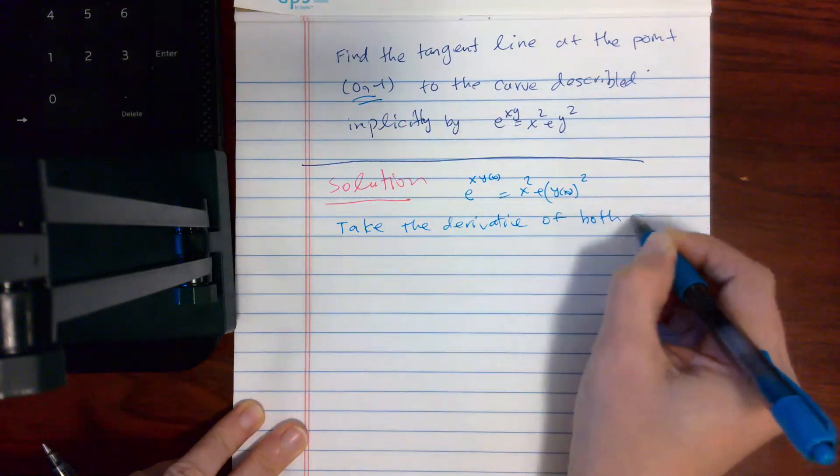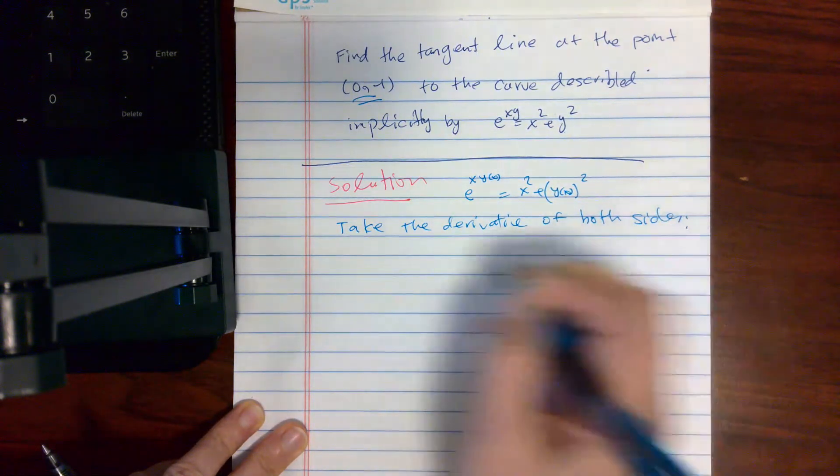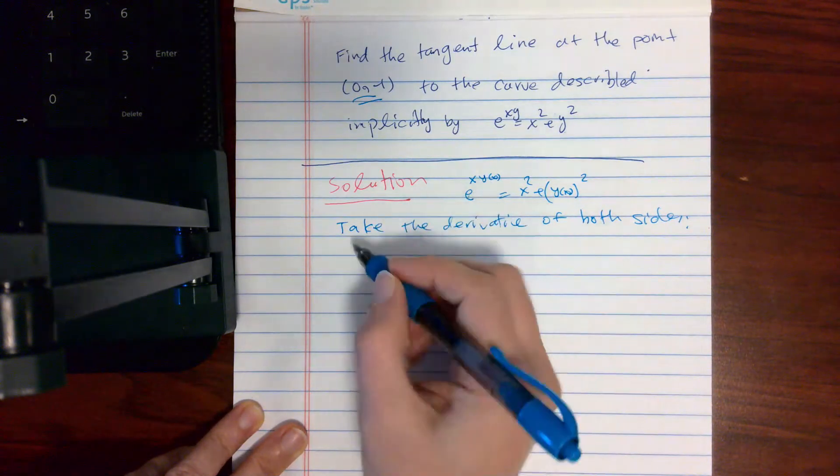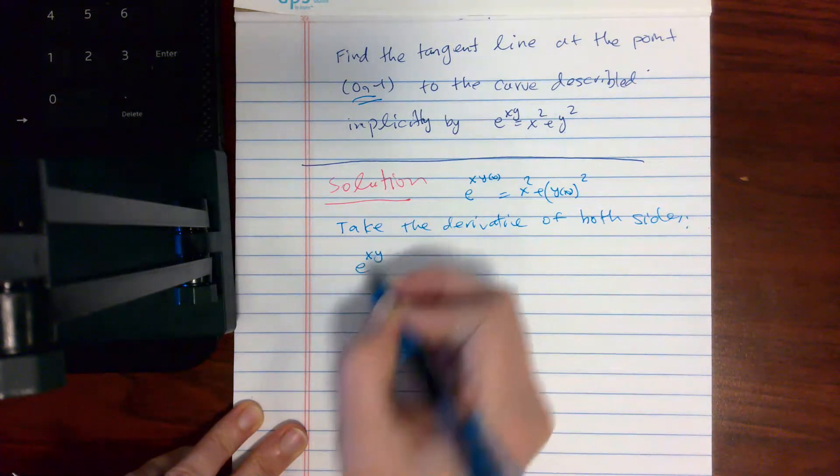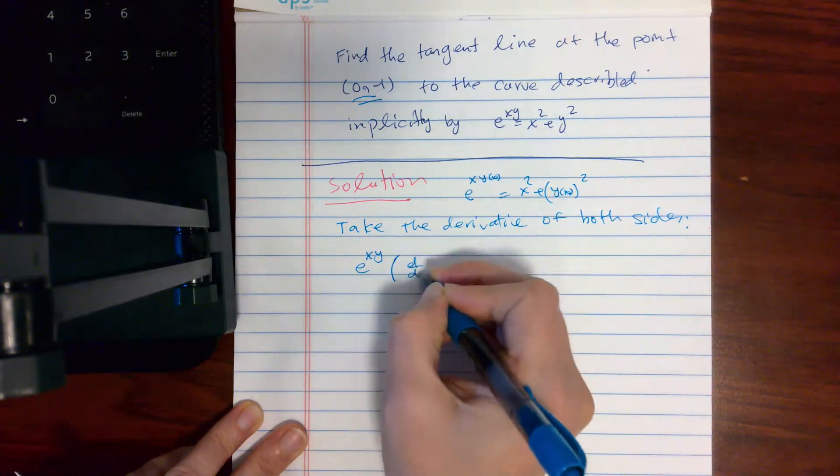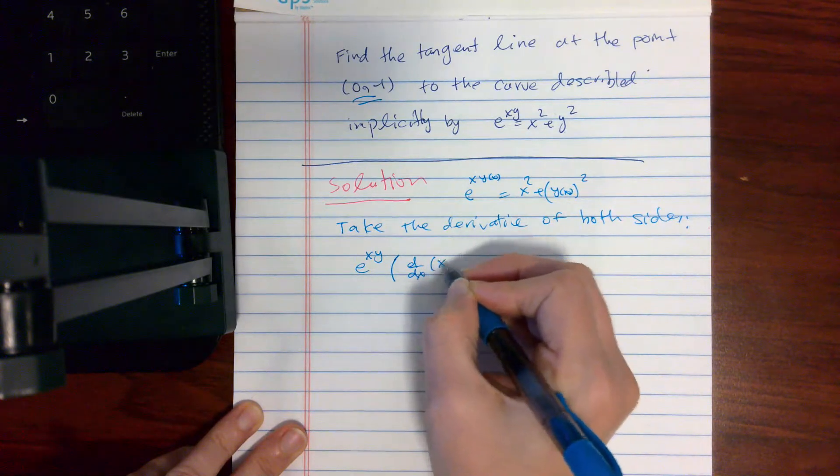And derivative of e to the power xy, it's going to be e^(xy) times the derivative of the inside, xy.